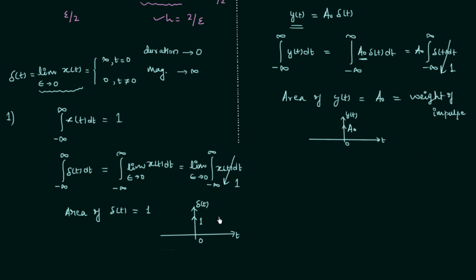When you draw signal y(t), the arrow represents infinite magnitude at t equals 0, and you also write a0 which represents the weight of the impulse — the area of the impulse. This is how we differentiate between unit impulse and normal impulse signals: in unit impulse the area is 1, but in normal impulse signals the area can be something else like 2, 3, 4, etc.